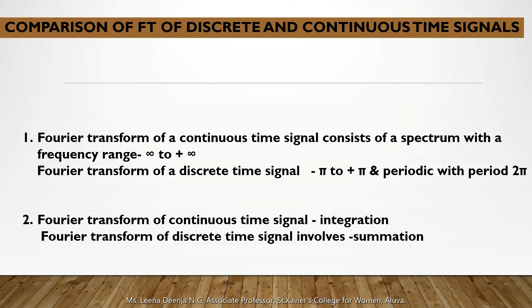Comparing the Fourier transform of discrete and continuous time signals: first, the Fourier transform of a continuous time signal has a frequency range from -∞ to +∞, whereas the Fourier transform of a discrete time signal has a frequency range from -π to +π and is periodic with period 2π. Second, the Fourier transform of a continuous time signal involves integration since the signal is continuous, whereas for a discrete time signal it involves summation because the signal is discrete in nature.